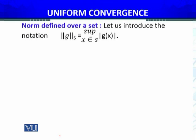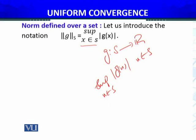Norm defined over a set: throughout Real Analysis II course, let us introduce the notation ||g||_s = sup_{x∈S} |g(x)|. This means g is a function from S to the set of real numbers. Take the absolute value of g(x) for x belongs to S, and find the maximum value as x varies. The supremum, the maximum value whenever x belongs to S, we call this the norm of the function g with subscript S to indicate the domain, the norm over that set.